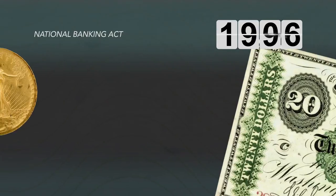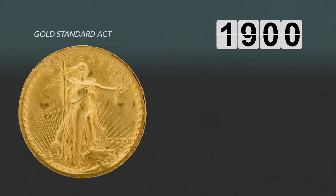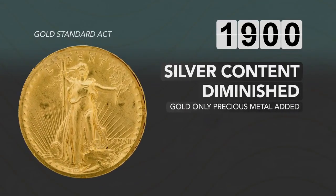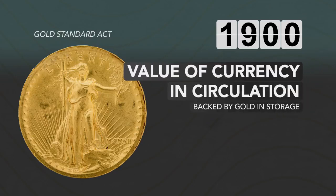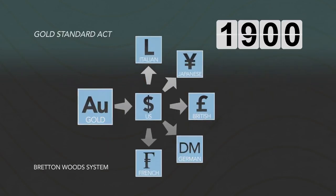By 1900, and the passing of the Gold Standard Act, the U.S. dollar had seen its silver content diminish completely and gold was the only precious metal added to the metallic mix. The gold standard meant that the value of the currency in circulation was backed by gold in storage. This helped the U.S. currency gain global traction, and under the Bretton Woods system of monetary management adopted after the end of the Second World War, all other currencies were valued in terms of the U.S. dollar and so could be compared directly to the gold standard.